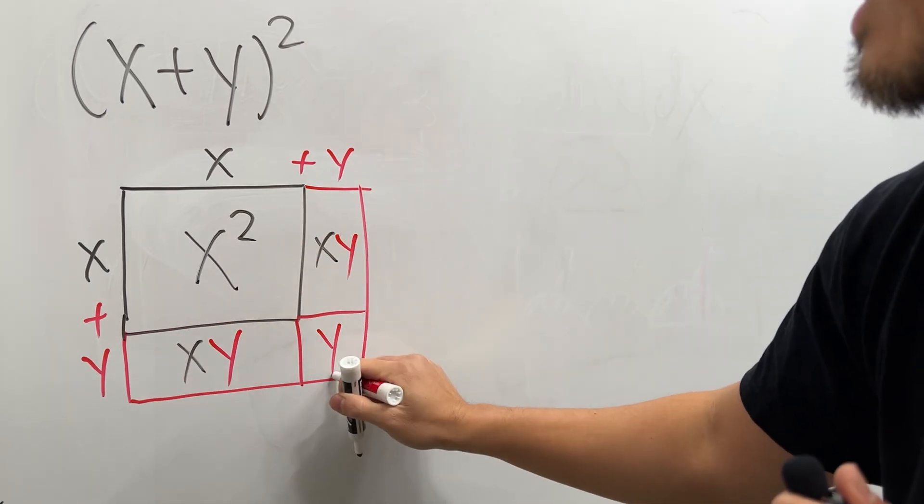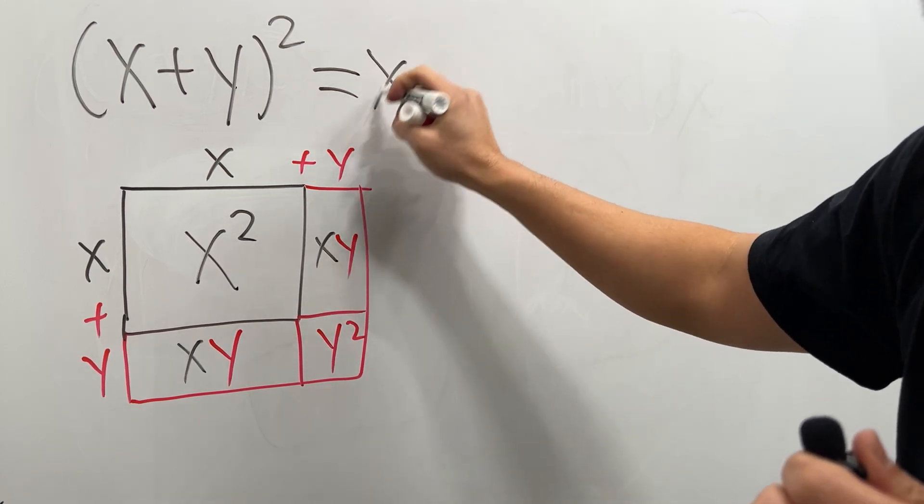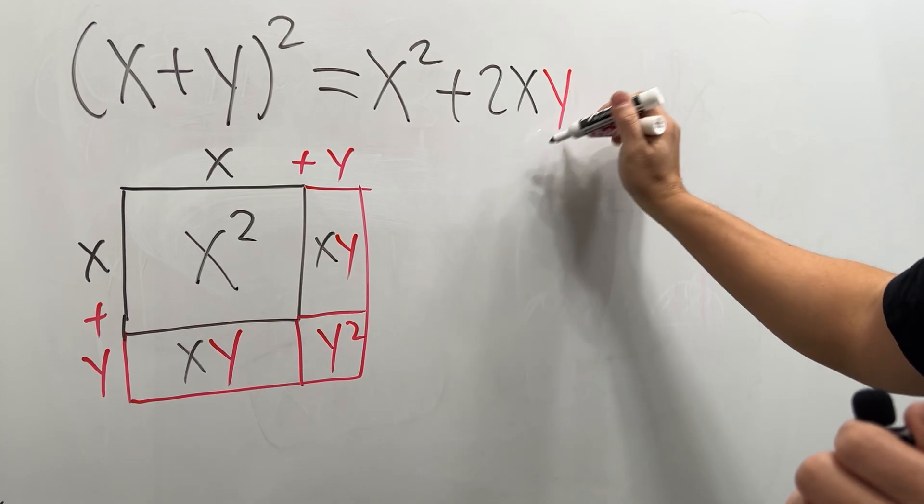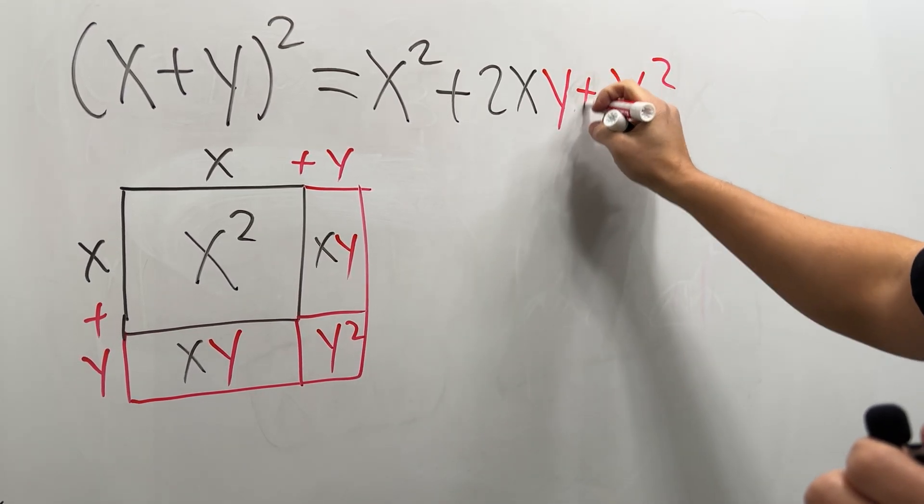So as you can see, (x+y)² is equal to x² right here. And this is not the same, so we can just say plus two of them, so 2xy. And lastly we have one more, this guy, so plus y², and that will do it.